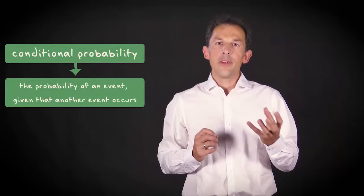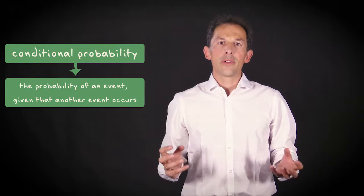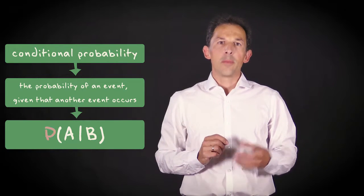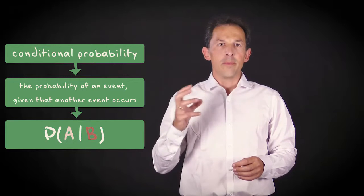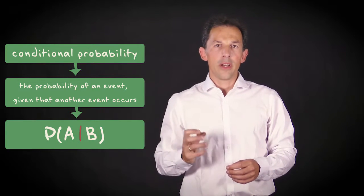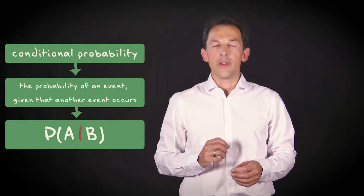Its formal definition is as follows: the probability of an event given that another event occurs. And this is its mathematical notation, the probability of an event A given that B occurs or conditional on B. The vertical line is shorthand for the words given or conditional.